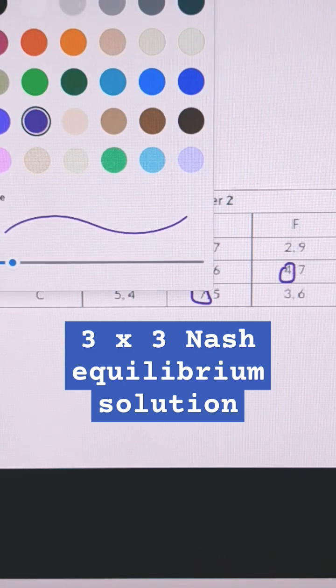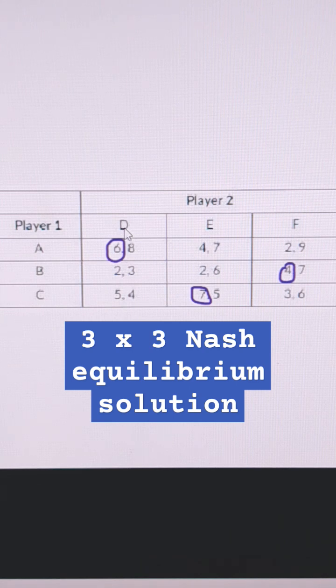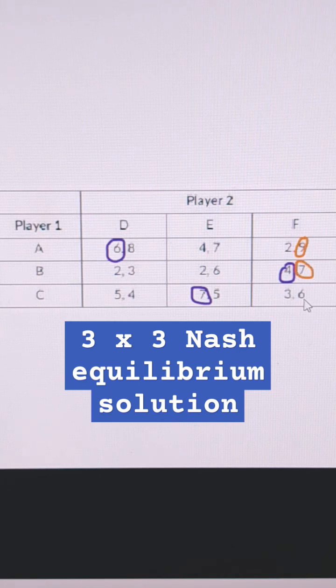For Player 2 now, their choices are D, E, and F. If Player 1 goes A, we circle what is best for Player 2. If Player 1 does B, what should Player 2 do? They should go F. This right here is a Nash equilibrium.